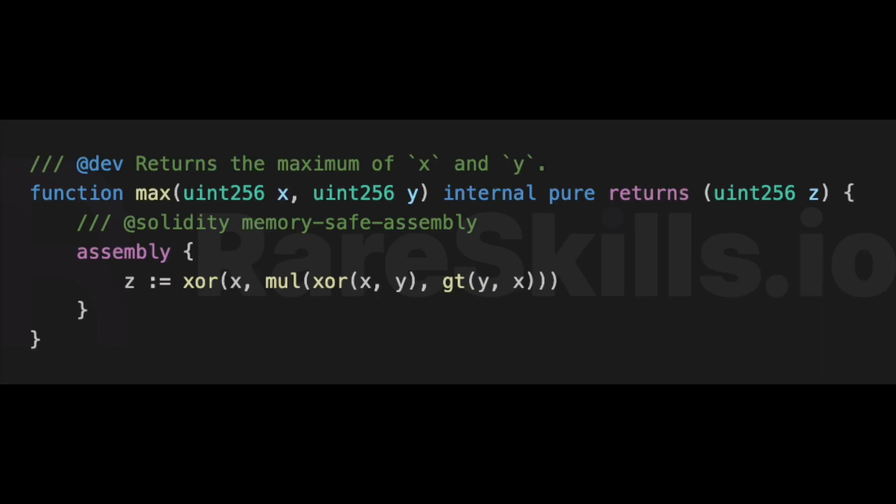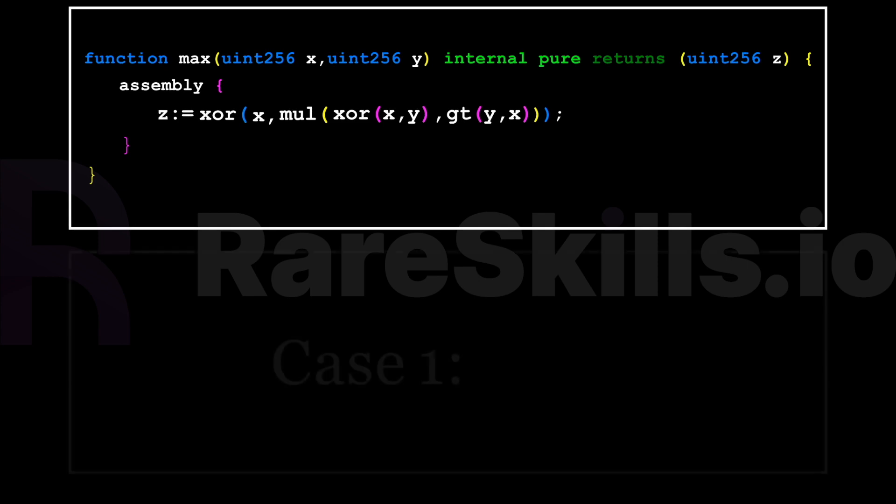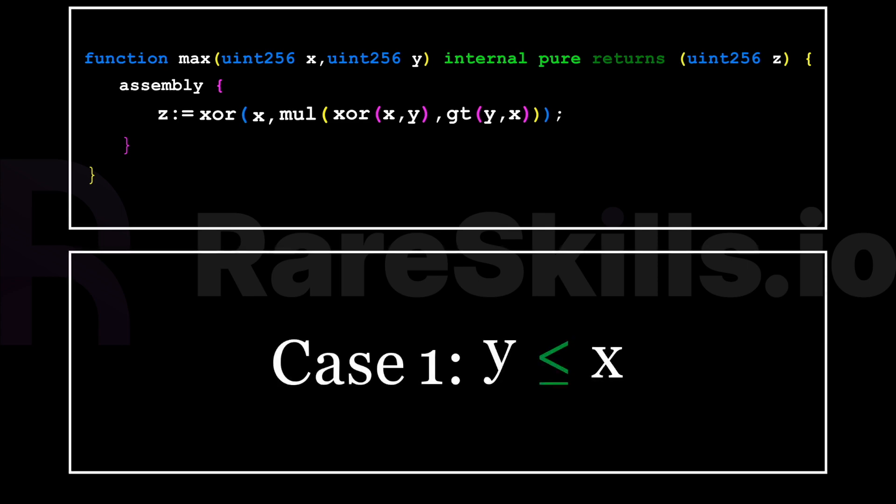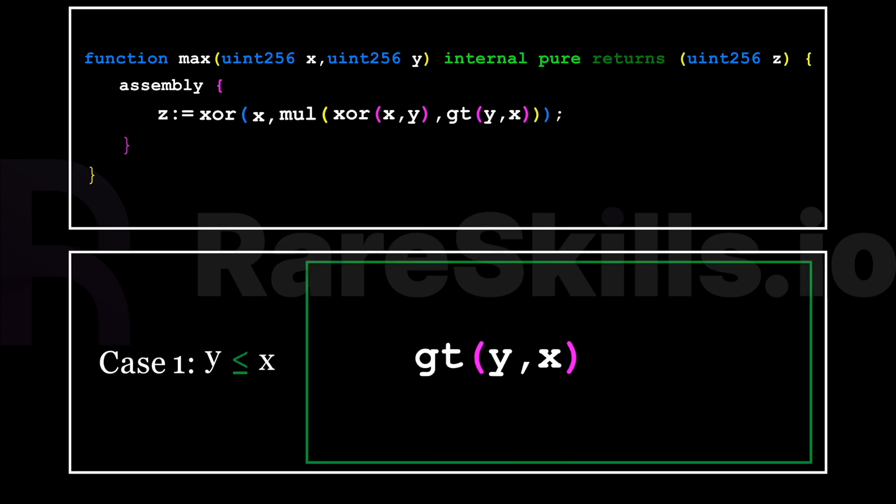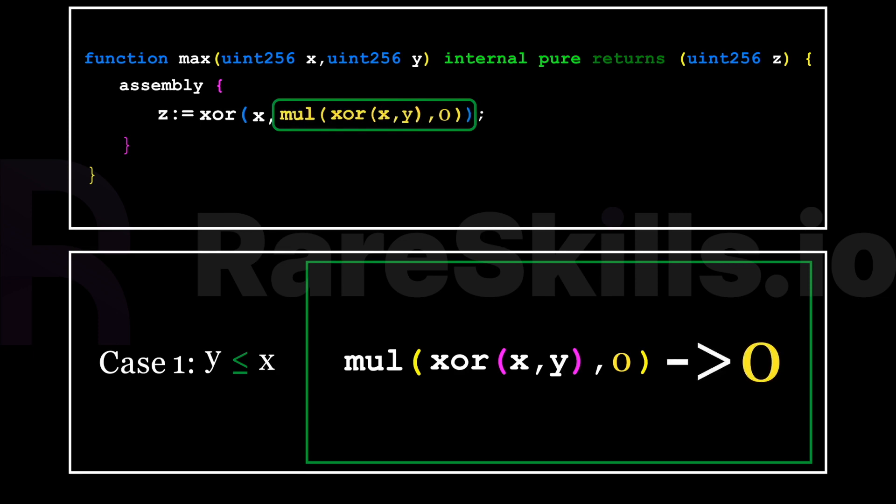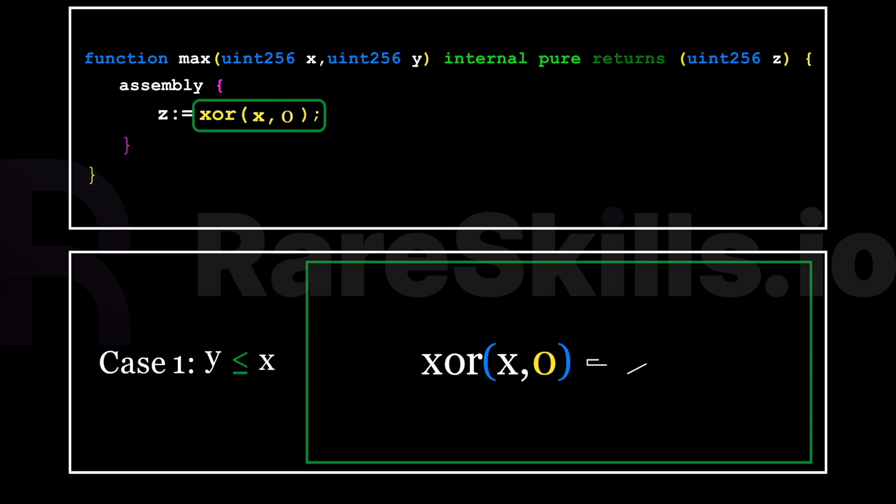We are now ready to revisit the Solidity max function. First, we consider the case where y is less than or equal to x. In this case, gt yx will evaluate to 0. Anything multiplied by 0 will result in 0, so we can eliminate the term shown here. Finally, we are left with x xor 0, and we know that results in x. So if y is less than or equal to x, the function returns x as the max.